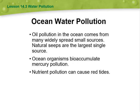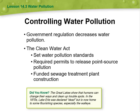Then we have ocean water pollution. Oil pollution in the ocean comes from many widely spread small sources, and natural seeps are the largest single source. Ocean organisms bioaccumulate mercury pollution. Nutrient pollution can cause red tides. Regarding controlling water pollution, government regulation decreases water pollution. The Clean Water Act and water pollution standards require permits to release point source pollution and funded sewage treatment plant construction.